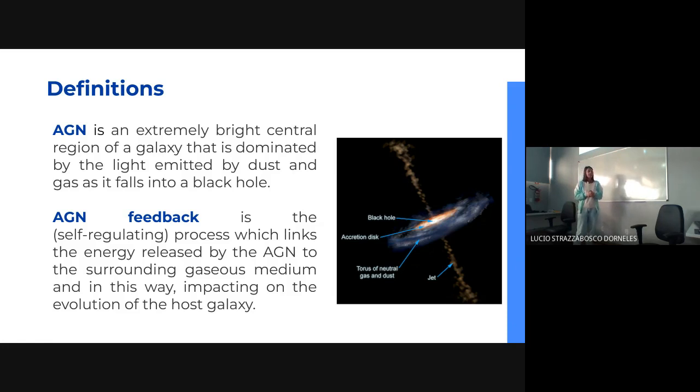AGN feedback is a self-regulating process which links the energy released by the AGN to the surrounding gas and interstellar medium, and in this way impacts the evolution of the host galaxy. That means how the AGN affects the whole galaxy.